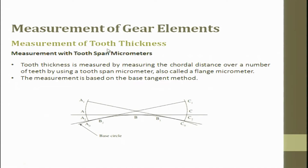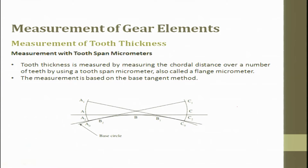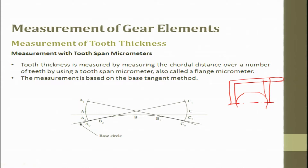Continuing with the measurements of tool thickness — when we try to take a gear, the thickness of the teeth is what we have to measure. Here is the pitch circle diameter and this is what we have to measure. There is a tooth span micrometer available which we will use to figure out the tooth thickness.